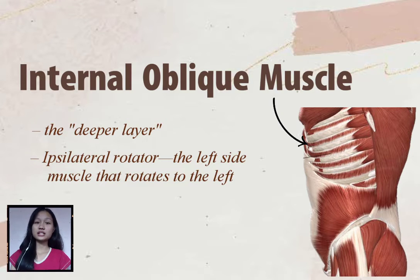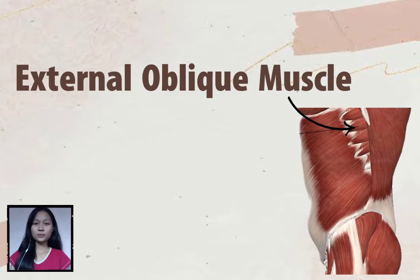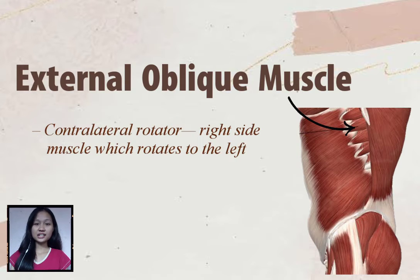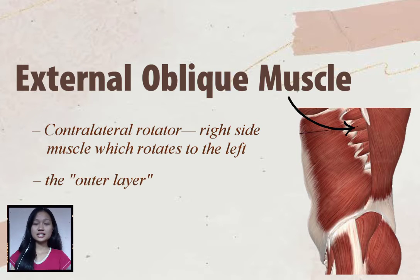The internal oblique is an ipsilateral rotator, meaning the left side muscle rotates to the left. The external oblique muscle is the thickest and runs from the lower ribs to the iliac crest. It is a contralateral rotator, where the right side muscle rotates to the left. That is the outer layer.